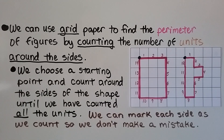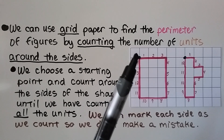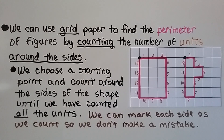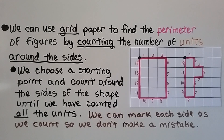We can use grid paper to find the perimeter of figures by counting the number of units around the sides. We choose a starting point — I like to start in the upper left corner and go around clockwise. We choose a starting point and count around the sides of the shape until we have counted all the units, and we can mark each side as we count so we don't make a mistake.